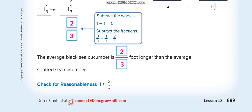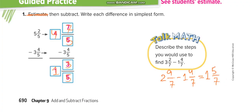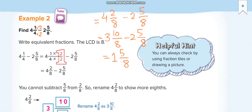Now another renaming question: 4 and 1 over 4 minus 2 and 5 over 8. First, we make the denominators the same — multiply by 2 on top and bottom for the first fraction — so it becomes 4 and 2 over 8 minus 2 and 5 over 8. Now you can see the numerator 2 is smaller than 5, so we cannot subtract.